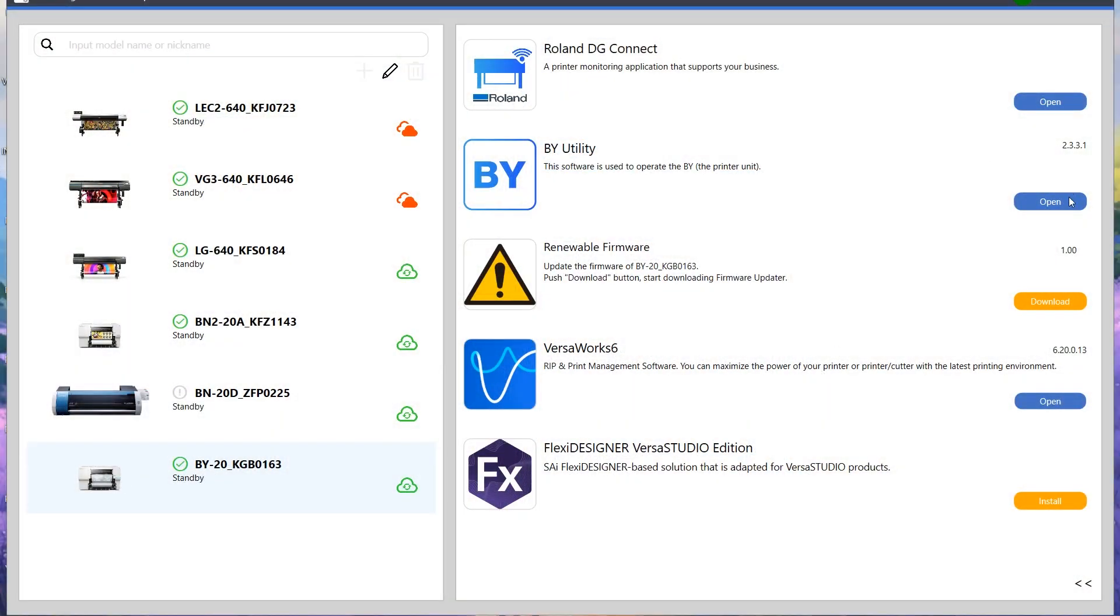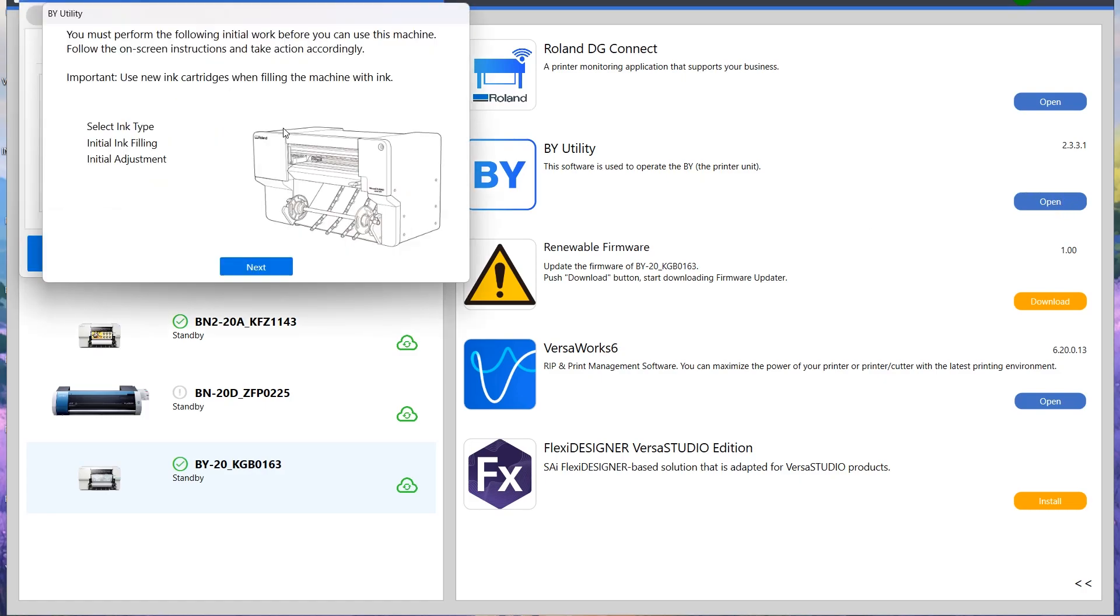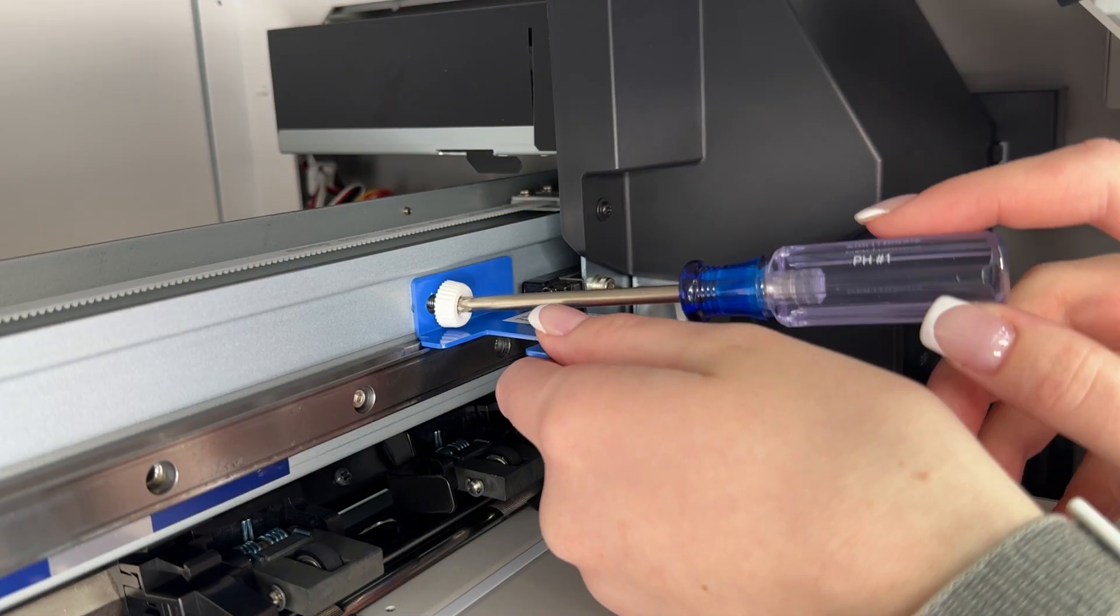If you have not downloaded VersaWorks and Roland DG Connect Hub yet, that is the first thing you will need to do. The new interface is now the Roland DG Connect Hub. Following the installation guide, the first thing we're going to do is remove the retainer.